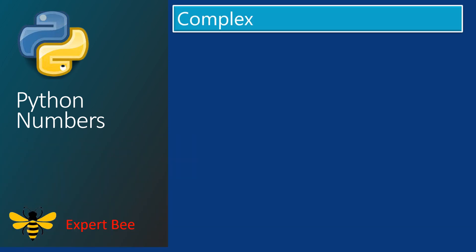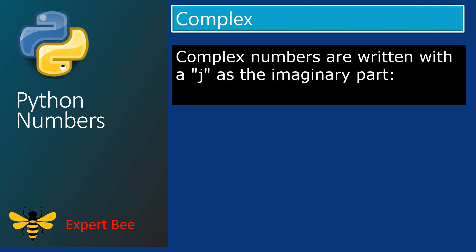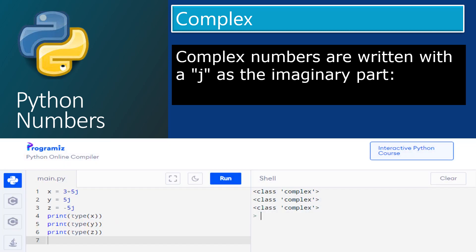Now let us look at the complex data types. Complex numbers are written with a j as the imaginary part. For example, x is equal to 3+5j, y is equal to 5j, z is equal to minus 5j. Print type x, print type y, print type z. After typing this code in the online compiler and pressing the run button, you will get the output in the shell section. The output clearly shows that all x, y, and z are of complex type. In x, 3 is the real part and 5 is the imaginary part. In y, 5 is the imaginary part, and in z, minus 5 is the imaginary part.